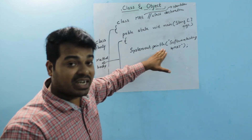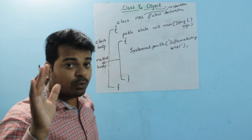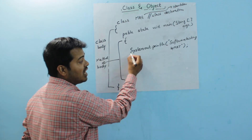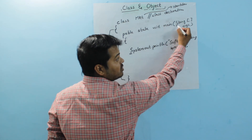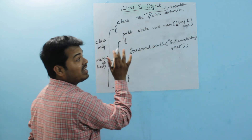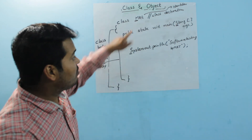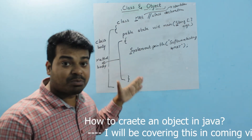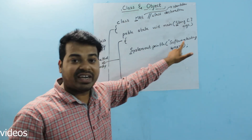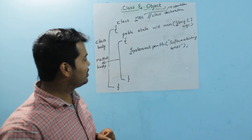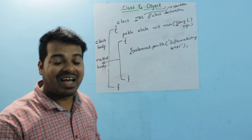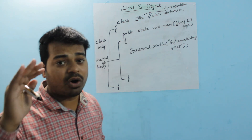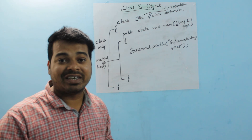This is called a print statement. Anything you want to print in Java, you write System.out.println — and this always starts with a capital letter. Similarly, your class name identifier always starts with a capital letter. Always remember this; if you don't, you will get an error. If you run this program, you will get the output 'Software Testing by MKT.' I hope this video was useful. List out all your doubts in the comments and I will cover them in upcoming videos.